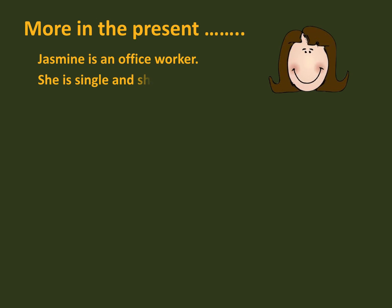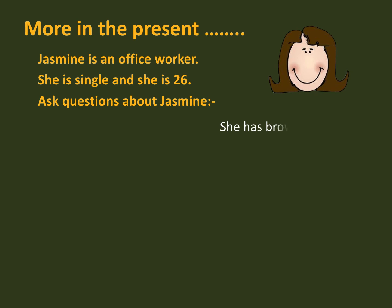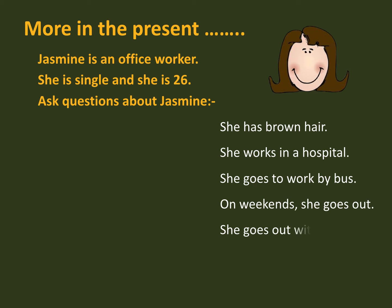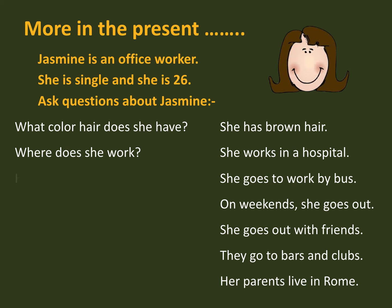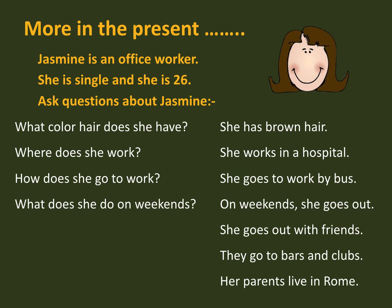Number three: let's create some more questions. This is about an office worker called Jasmine. So here are the answers, and you have to figure out some questions. Maybe there's not only one question form, but we'll show you the best questions. Stop the video for the exercise. And here are the best question forms. Maybe you can pause the video again to practice them.